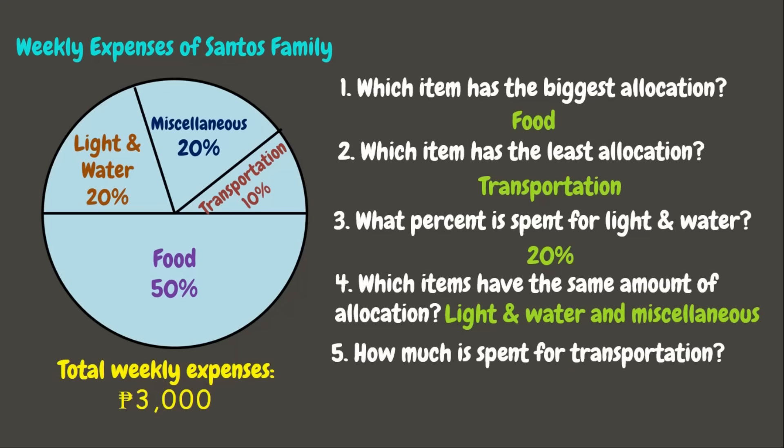Question 5: How much is spent for transportation? If the amount is not given, you can compute it by multiplying the percent of that item by the total amount. The percent for transportation is 10 percent and the total weekly expenses are 3,000 pesos. So: 3,000 pesos times 0.10 equals 300 pesos. If your answer is 300 pesos, you are correct!